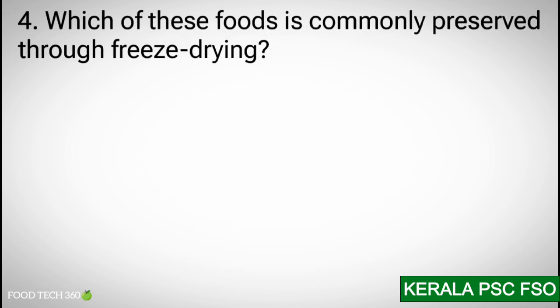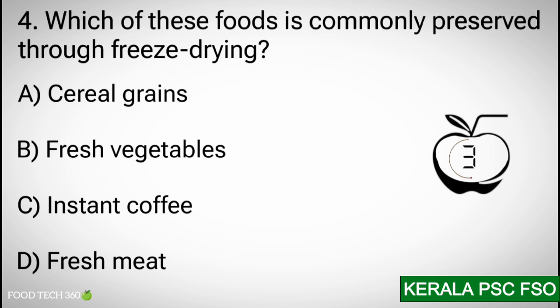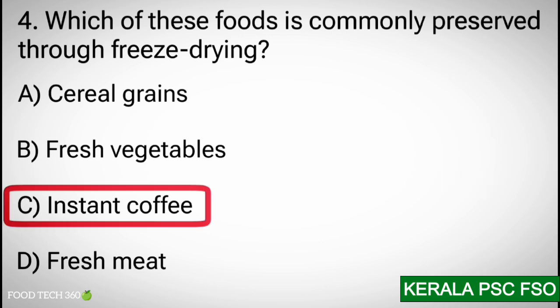Question number 4: Which of these foods is commonly preserved through freeze drying? Options: A) Cereal Greens, B) Fresh Vegetables, C) Instant Coffee, D) Fresh Meat. Correct answer: C) Instant Coffee.